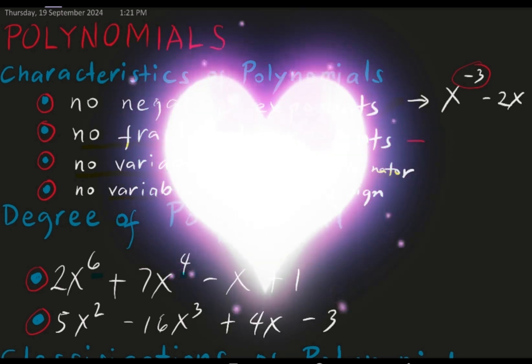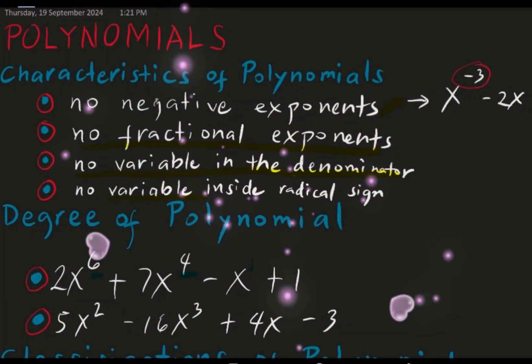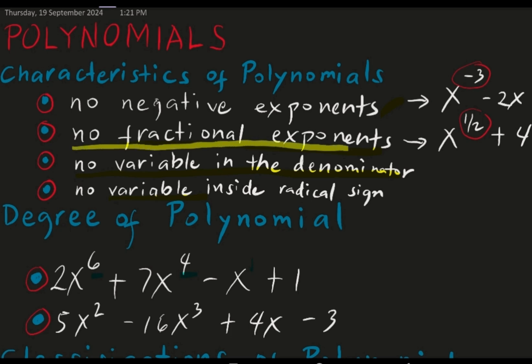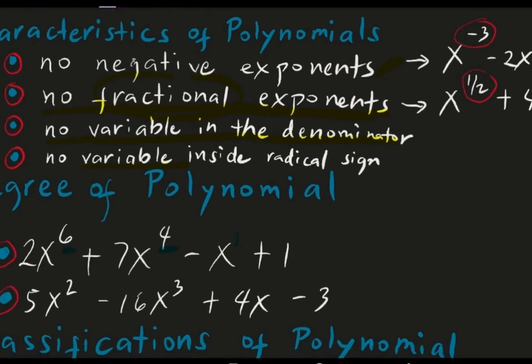Let's proceed to the second characteristic. For example, you have x raised to 1 half plus 4. Do we have a fractional exponent here? Yes, our fractional exponent is 1 half. Because of that, it is not a polynomial because it did not satisfy characteristic number 2: there must be no fractional exponents.